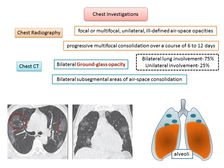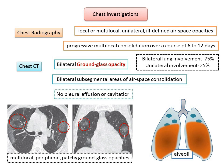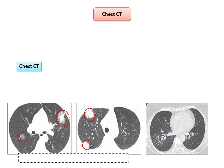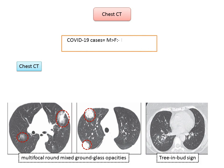This is a chest CT of a patient affected with COVID-19 exhibiting multifocal peripheral patchy ground glass opacities. No pleural effusion or cavitation is seen. Another case shows multifocal round mixed ground glass opacities, predominantly seen in the peripheral region of the lungs. A tree-in-bud sign can also be seen in a few patients of COVID-19. Based on investigative statistics, it was found that COVID-19 was more often found in men than in women, with a potential explanation being protection provided by the X chromosome and sex hormones, which play an important role in innate and adaptive immunity.